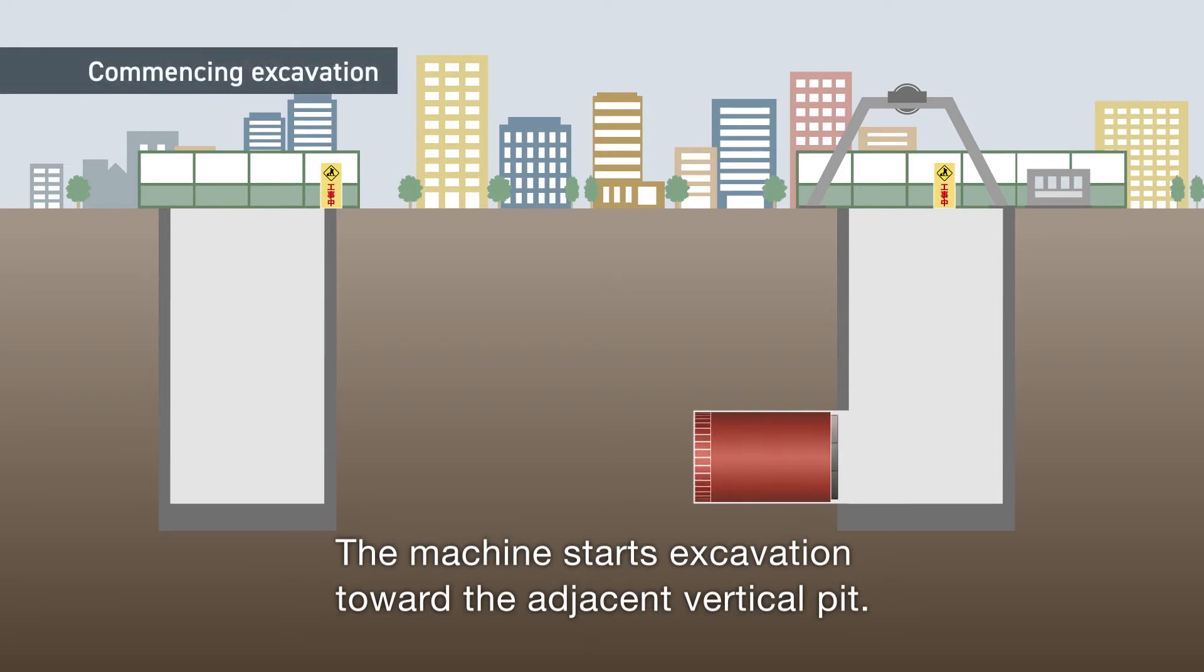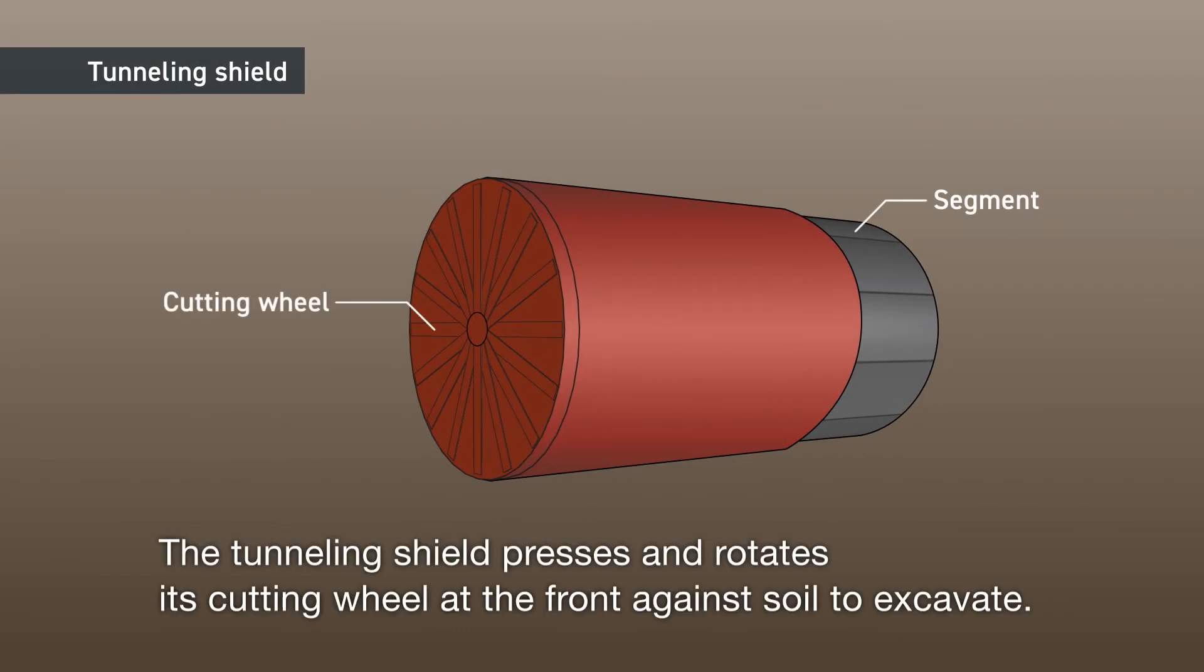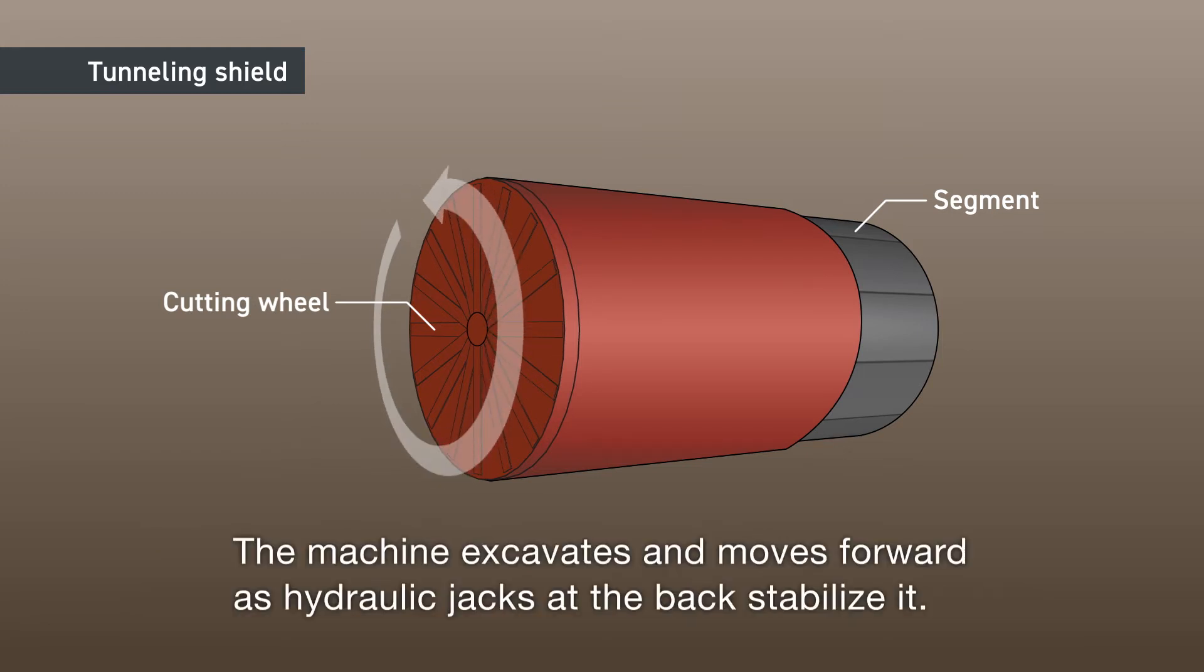The machine starts excavation toward the adjacent vertical pit. The tunneling shield presses and rotates its cutting wheel at the front against soil to excavate. The machine excavates and moves forward as hydraulic jacks at the back stabilize it.